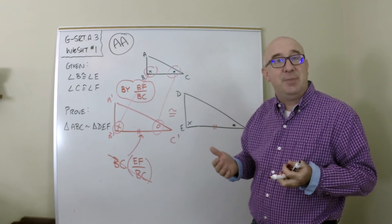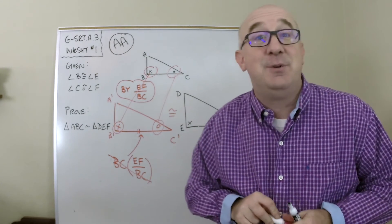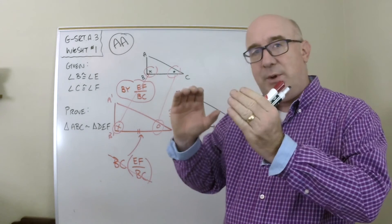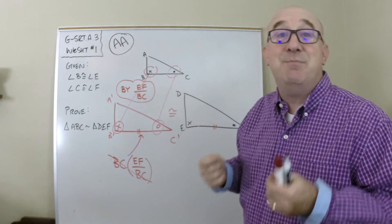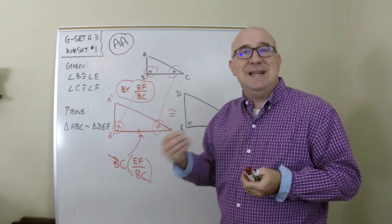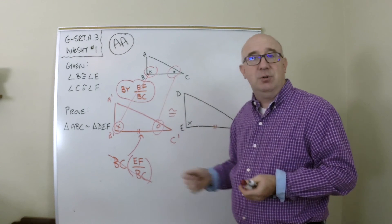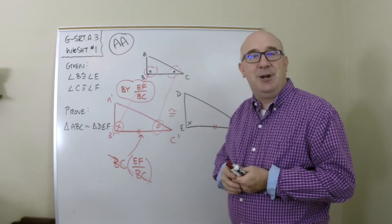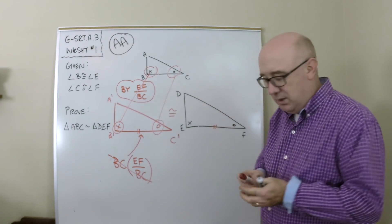I haven't written every small detail down, but I want you to understand the idea: start with your original triangle, do a dilation by a scale factor that matches the side you're interested in, denote what you did and what you found, and then discuss that the triangles are congruent by Angle-Side-Angle. Therefore they're similar through similarity transformations.